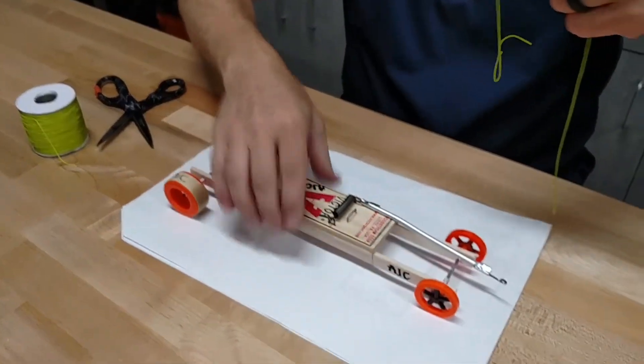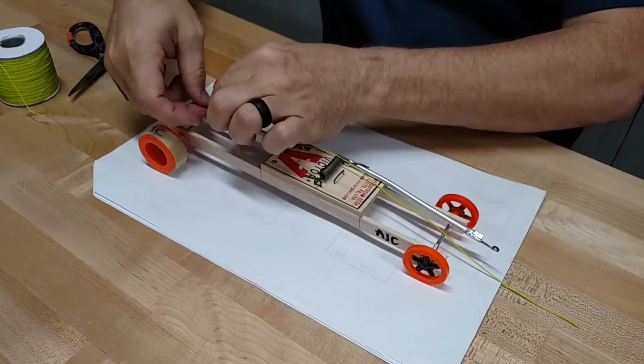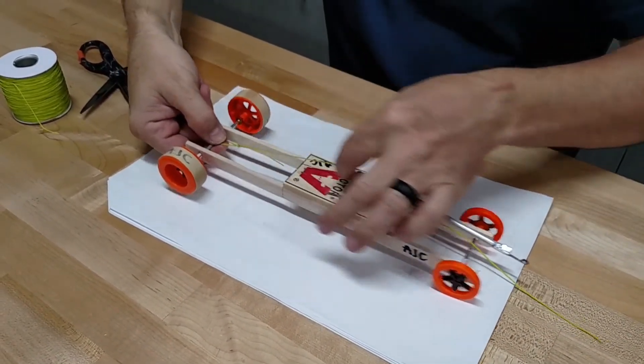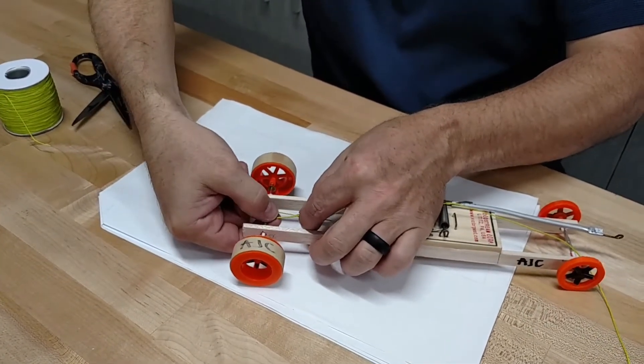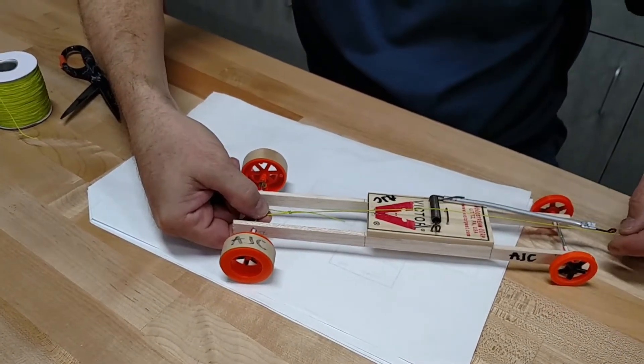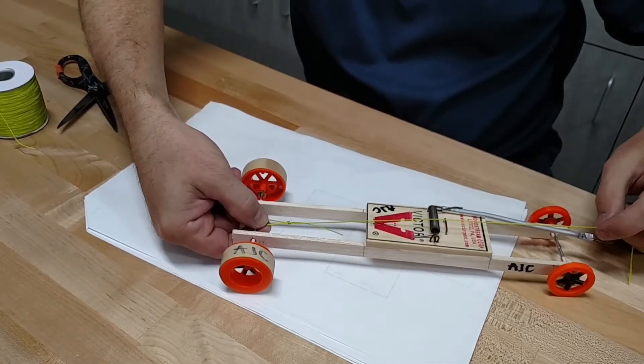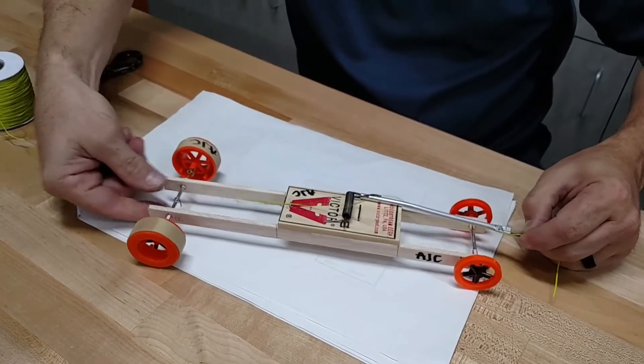Then what I do is I measure it just to the axle, just like this. If you can see that, just to the axle. And then I come up like this and go to where I need to be here, and then I'll hold it in place.